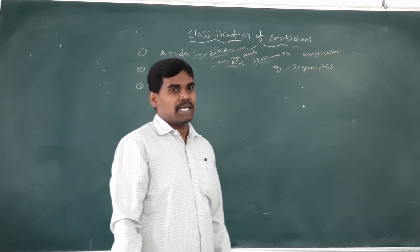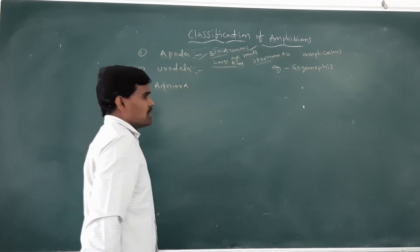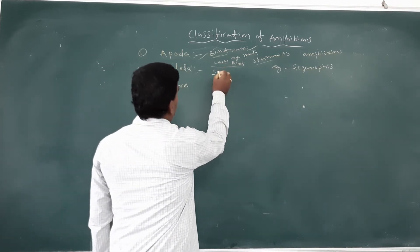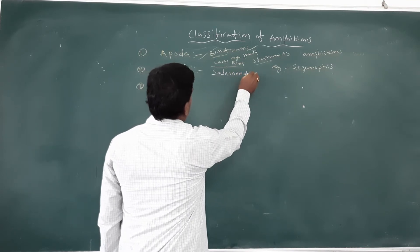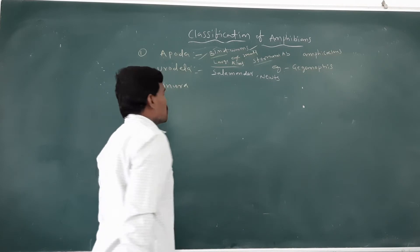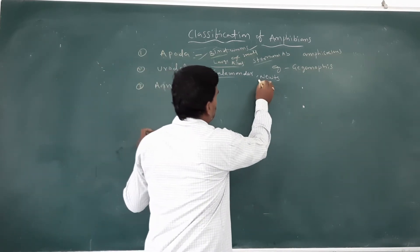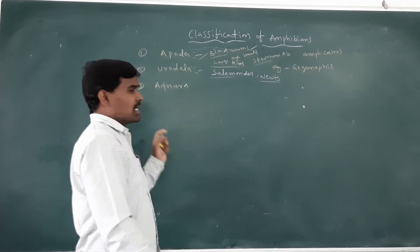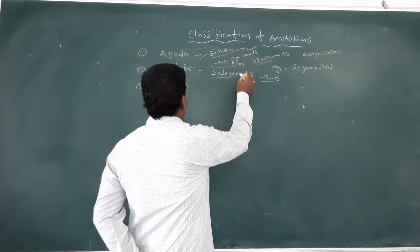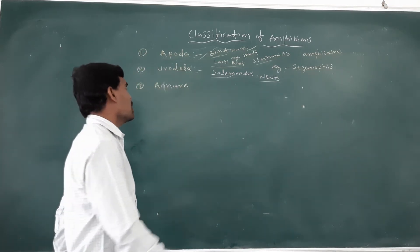The next is the second class: Urodela. Urodela includes the salamanders and the newts including the Sava mantas. Newts are present. Urodela — most of the capitals, most of the population of Urodela is in North America.